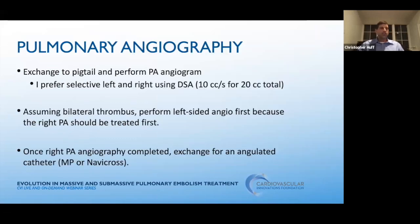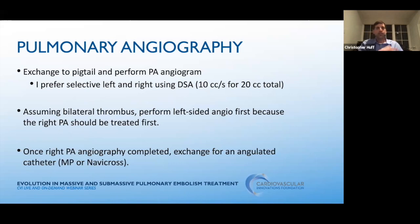Always obtain an opening PA pressure and a PA sat to get a baseline cardiac output. Once obtained, I exchange my Swan for a pigtail catheter and perform selective angiography in the right and left PA — 10 for 20. I always start on the left side because I like to end my angiography on the right, as that's the side I'm going to treat first. The right is the easier side to treat, and the catheter naturally wants to flip over to the left when you finish.